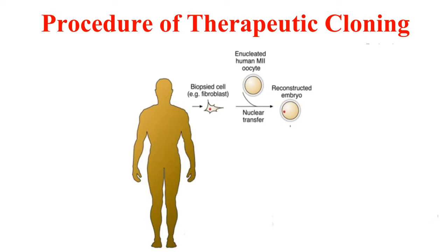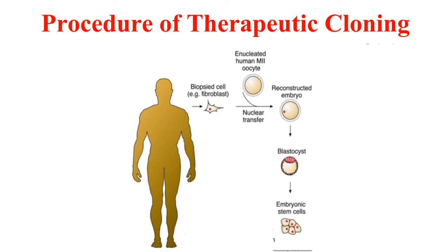Then a somatic cell is taken from the patient and the nucleus is removed from the patient's somatic cell and transferred into the enucleated egg, which can either be done by direct injection or by fusion of the somatic cell with the egg cell using electric cloning. This egg, which now contains the nucleus of the somatic cell, is stimulated to divide to form an embryo.